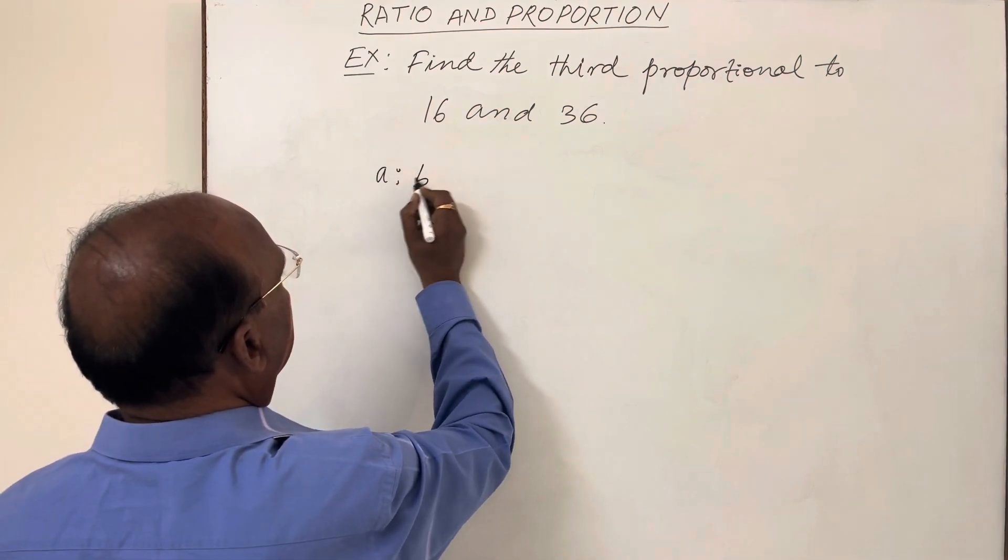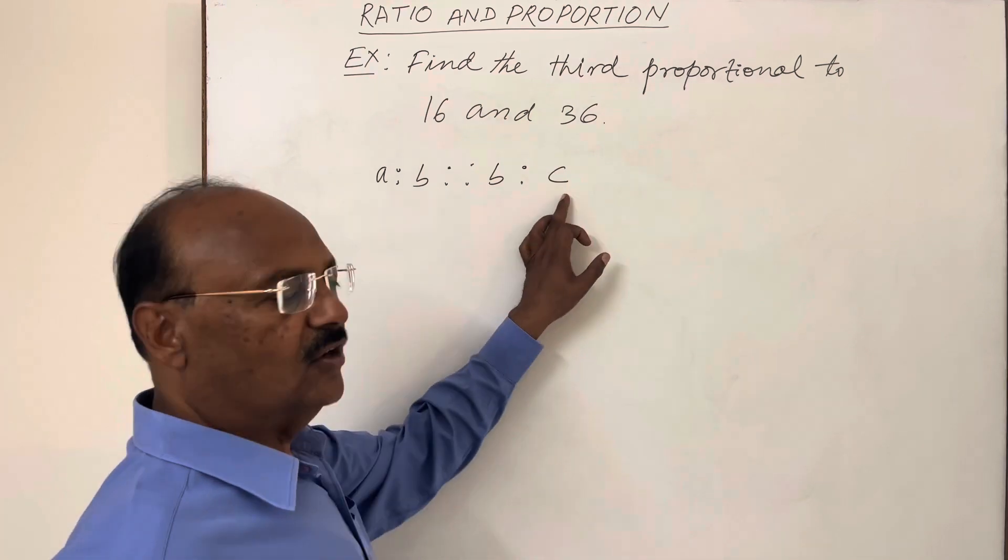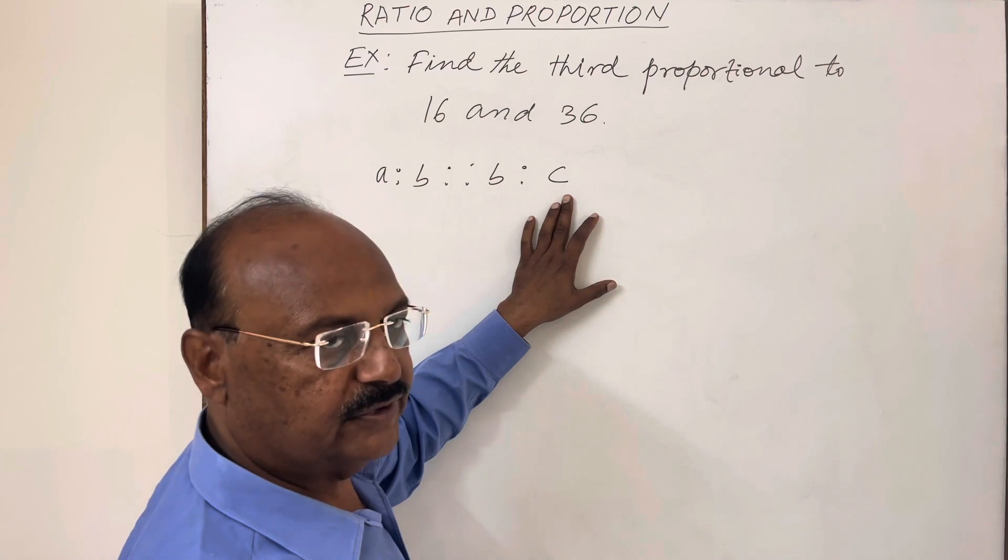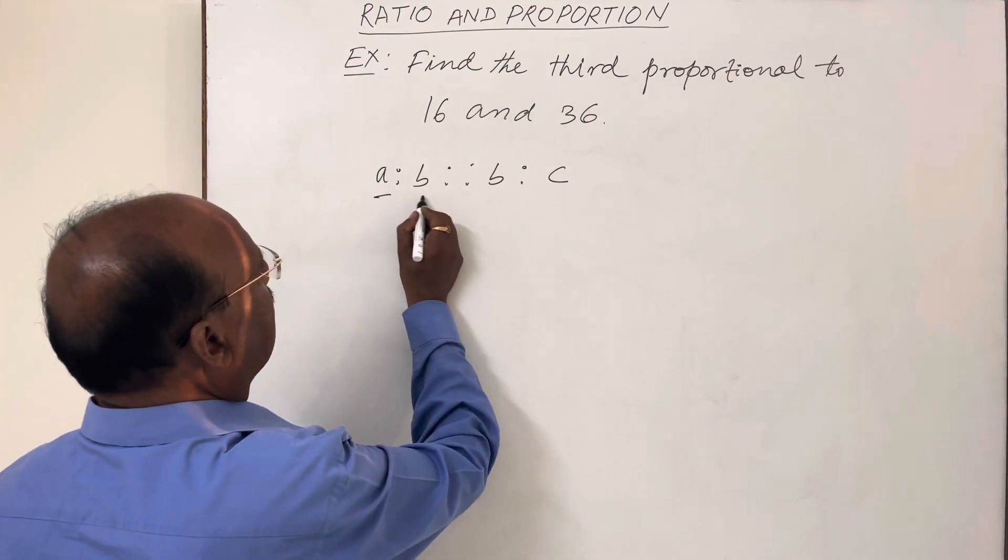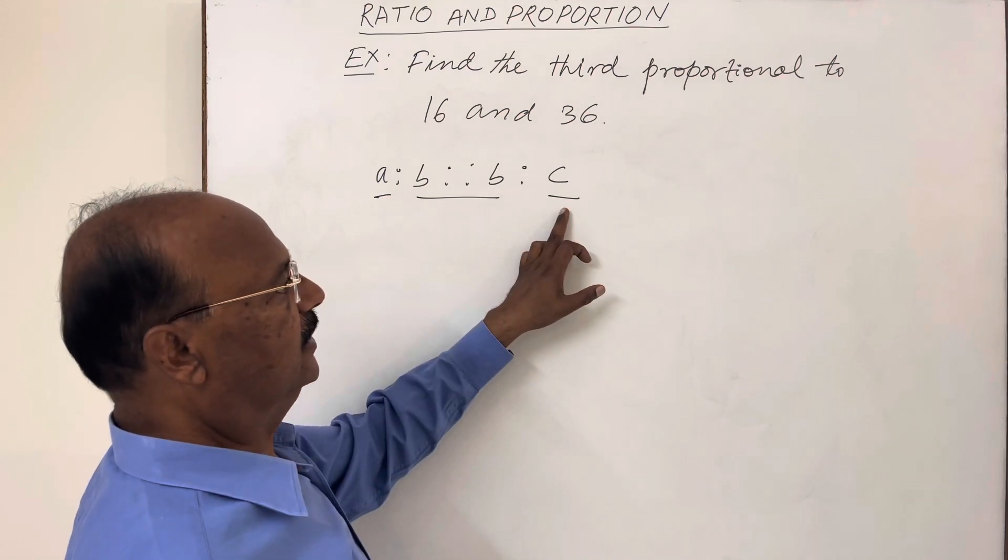is to B proportional to B is to C, then here C is called third proportion because there are only three types of numbers here: A, B, and C. So this is first, this is second, and this is third.